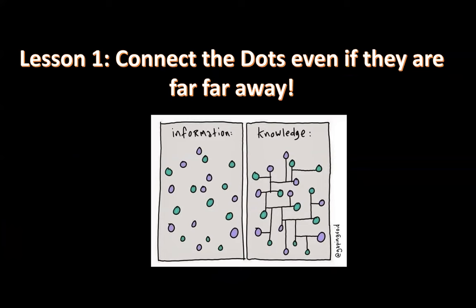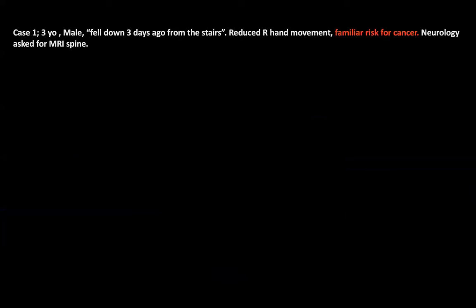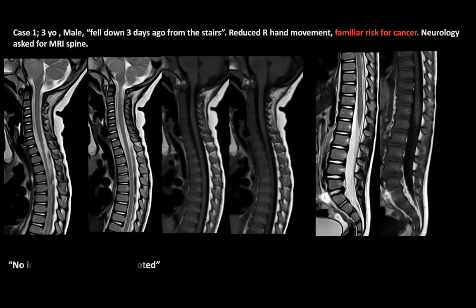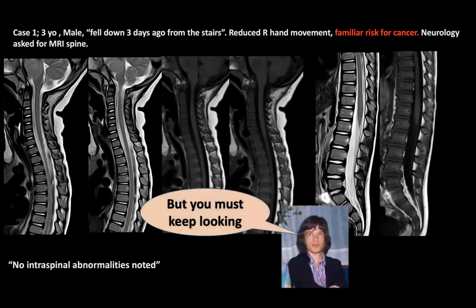This is a case-based presentation. The first case: a young male fell down stairs three days ago — a traumatic history — and now has reduced movement. There is also a family history of risk of cancer, but the neurologist requested an MRI spine suspecting traumatic injury. The spine was completely normal, but you must keep looking — and if you keep looking, something in the pons is abnormal.